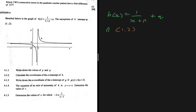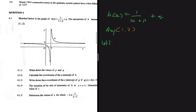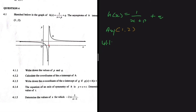For question 4.1.1, we need to write down the values of p and q. q is the horizontal asymptote. From our general knowledge of a hyperbola and from our graph, we can see that q = 2.